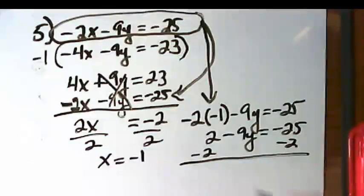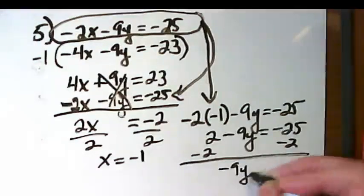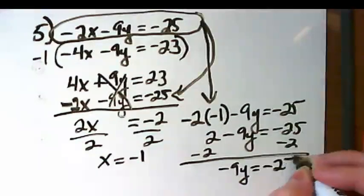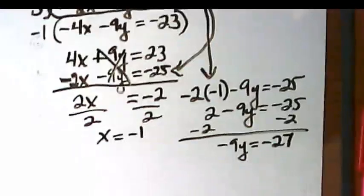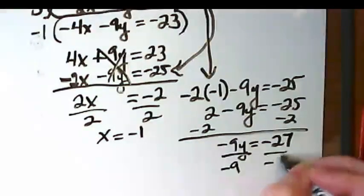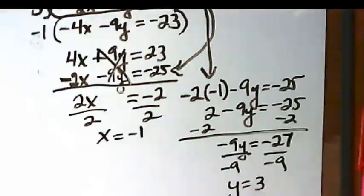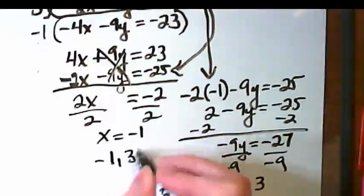Subtract 2 from both sides. You get negative 9y equals negative 27. Divide by negative 9, y equals 3. So we end up with negative 1, comma 3.